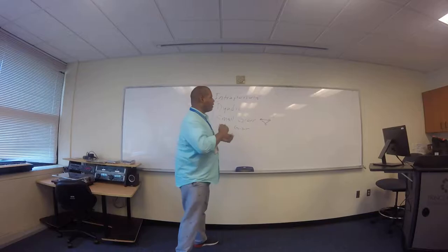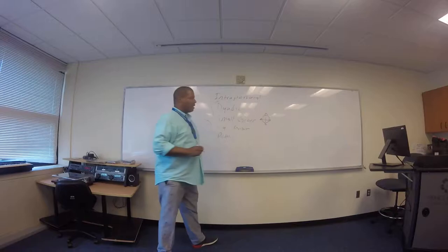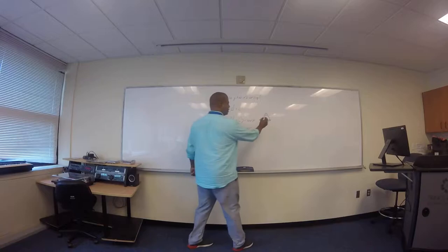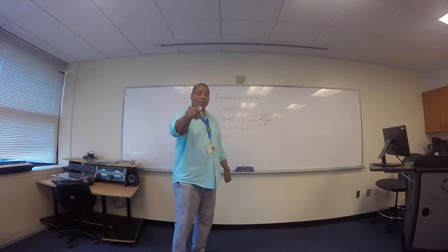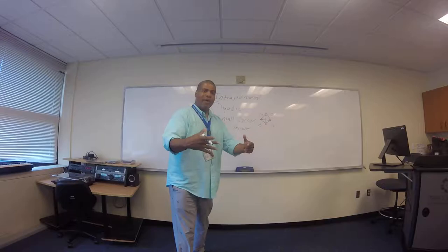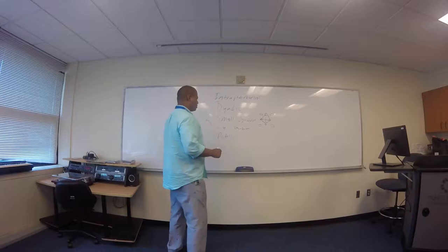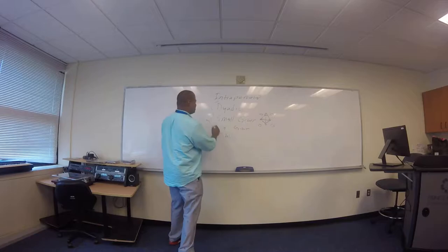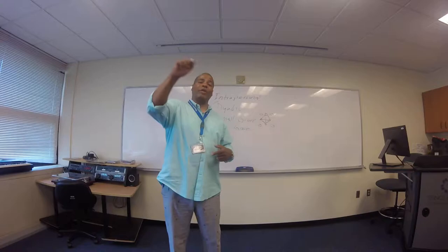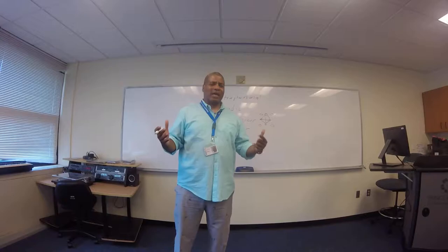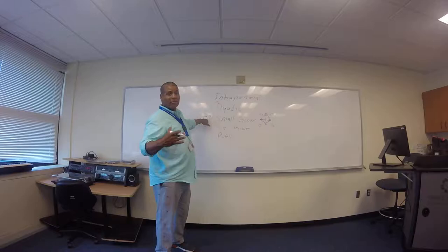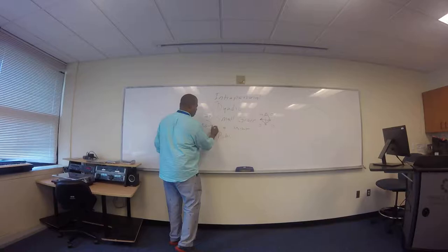You add another party and you've added six communication connections for four people. You add another party and you can see how small group communication can get out of control, because you've got to pay attention to every single one of those communication connections in a small group, as long as you are all in the same space consumed with the same message. Small group communication for our class ends at 29 — a person can manage on average 29 different individuals within all those communication connections.